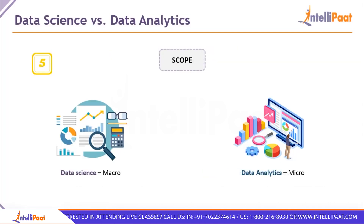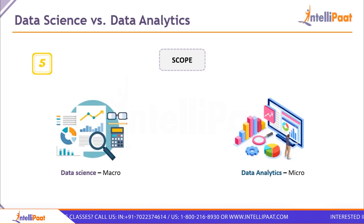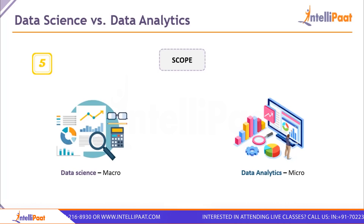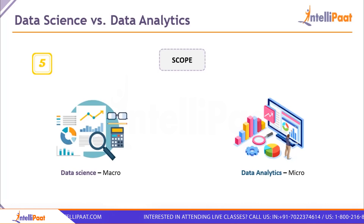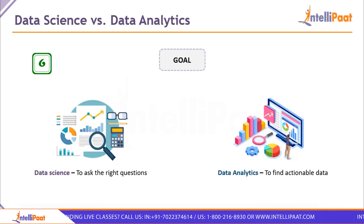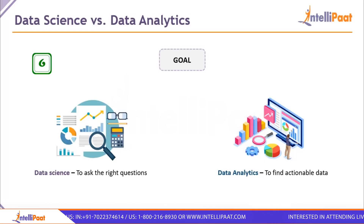Data science has a vast macro scope while data analytics is more suited for a microscopic scope. Data analytics is used to do certain tasks really well, and a data scientist can also do those tasks. But there are many tasks for data scientists that a data analyst cannot do. The goal of data science is to ask the right questions and get the right answers from the data, while the goal of data analytics is to find actionable data to drive business decisions.